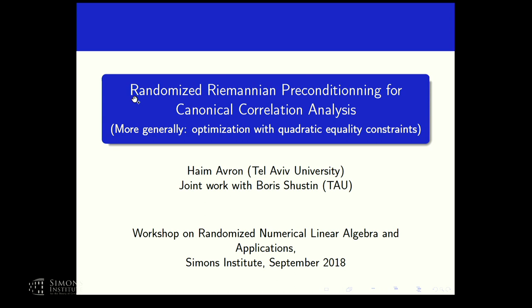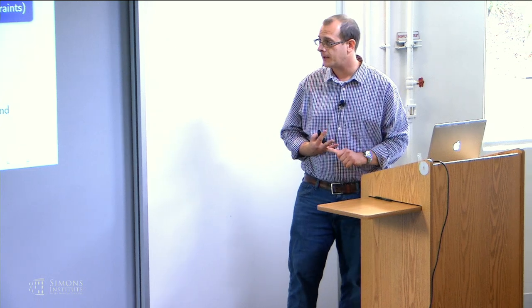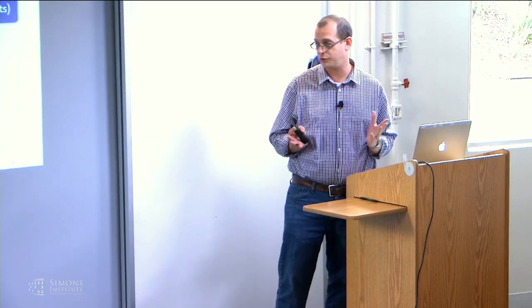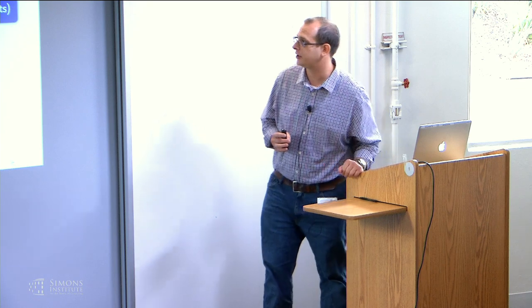I'm Zap, and I will tell you about randomized preconditioning. Thank you, Michael, and thank you to the organizers. I'm going to talk about solving canonical correlation analysis. I'll explain what that is. The technique I'm going to present is relevant in general when you have quadratic equality constraints, but to keep things concrete, we'll mainly discuss CCA.